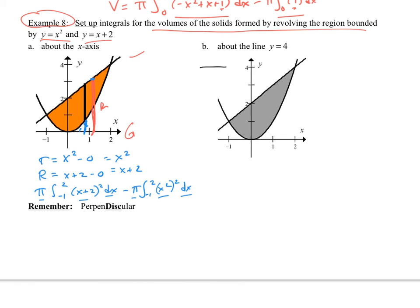Part b, if we revolve this around y equal to four, so that's my axis of rotation. Draw that in. And then you draw r, big r.